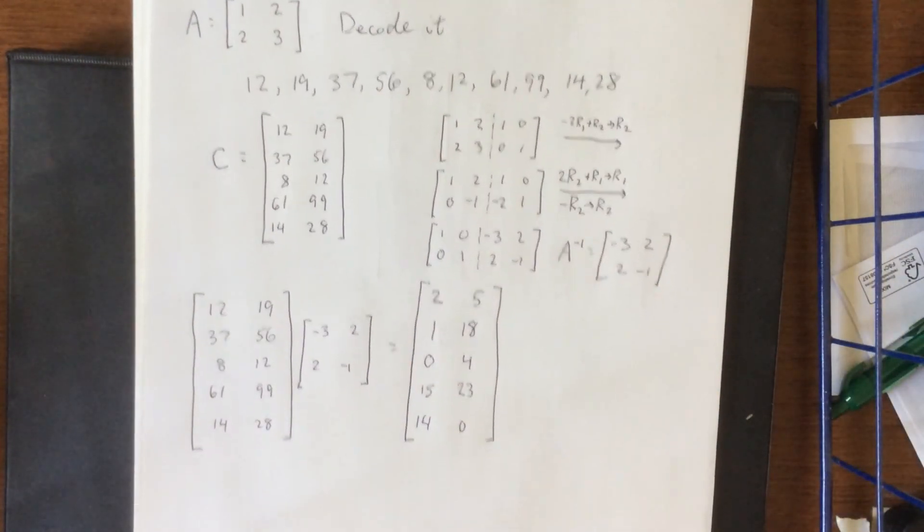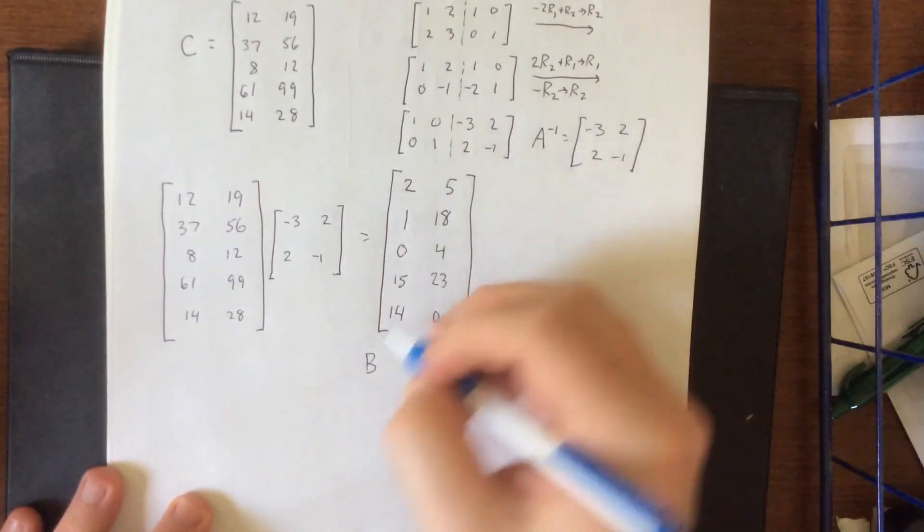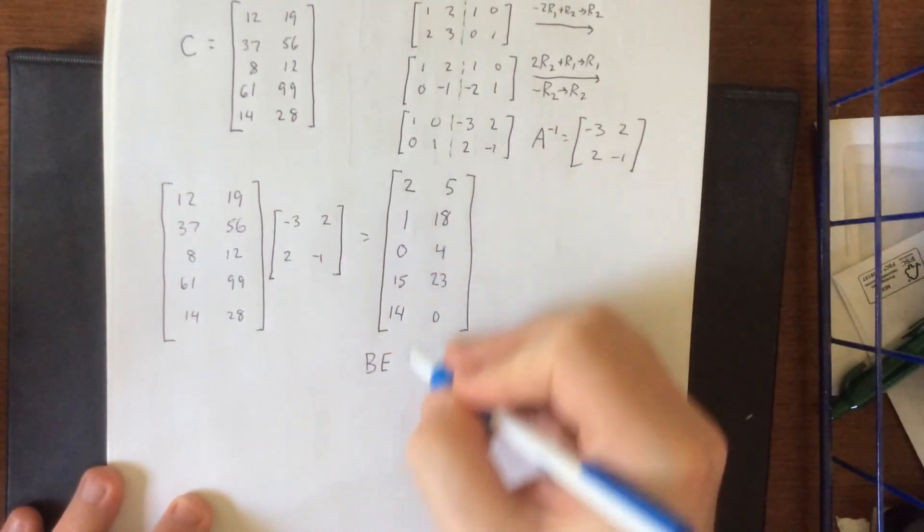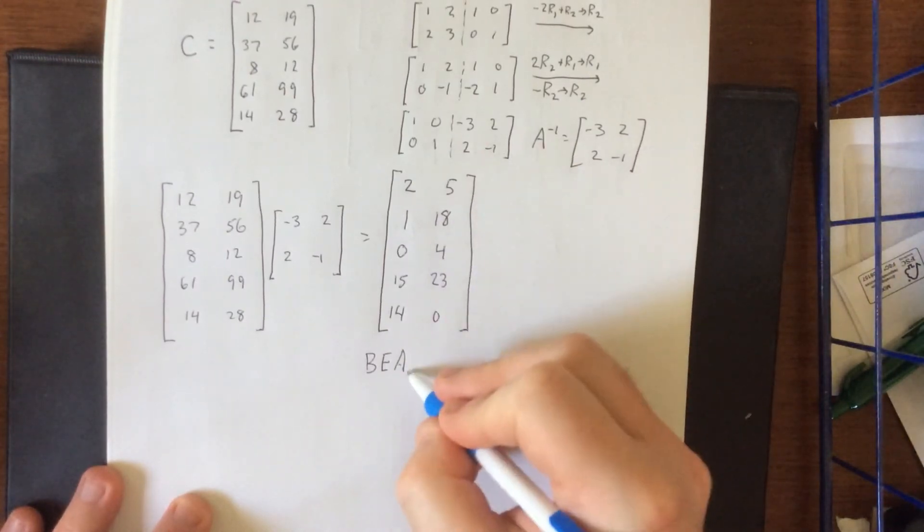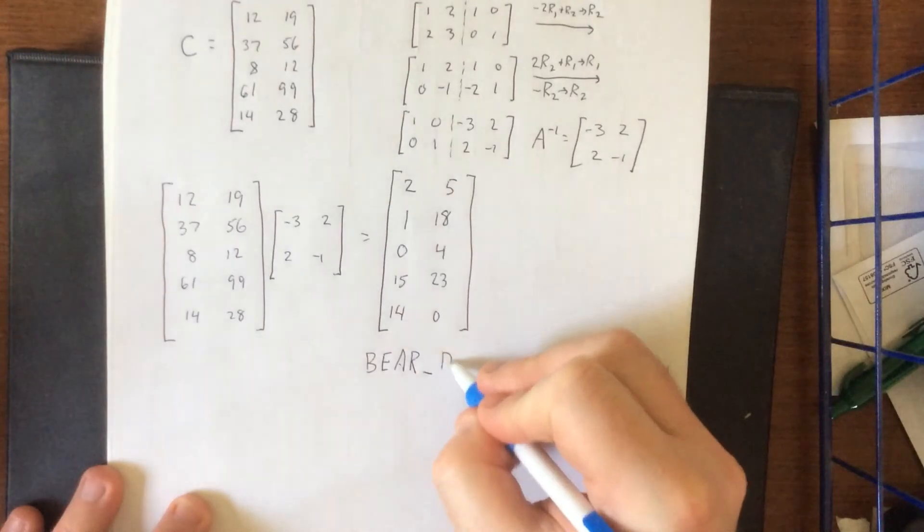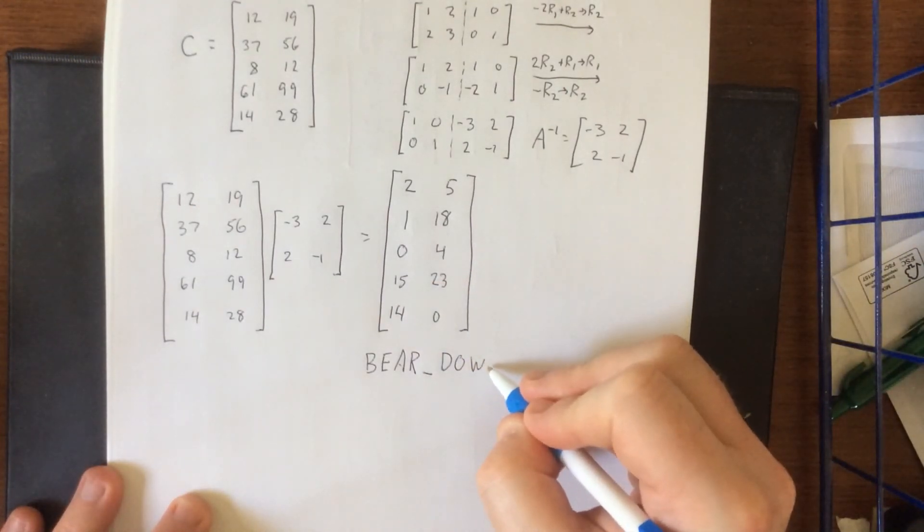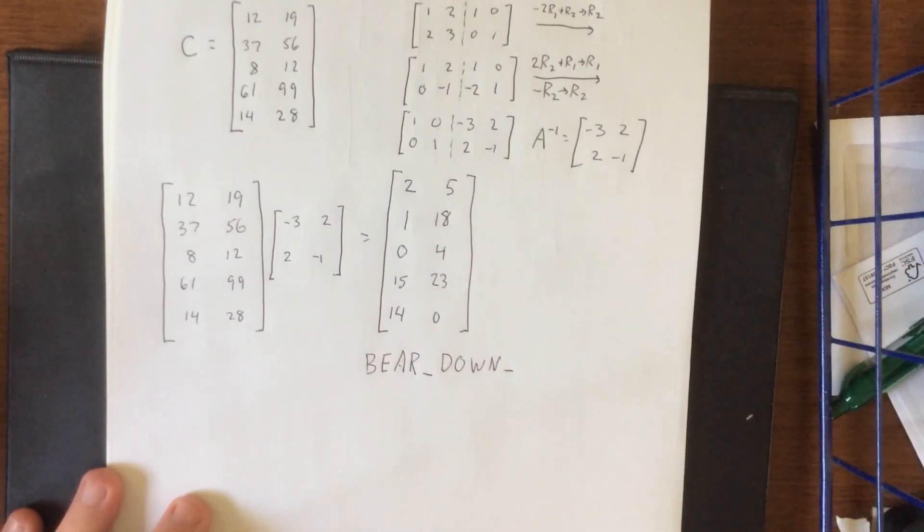So according to our alphanumeric code, 2 would be B, 5 is E, 1 is A, 18 is R, 0 is a space, 4 is D, 15 is O, 23 is... You know what? This was a dumb example. I don't want to talk about it anymore.